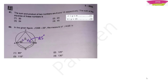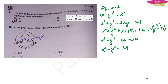The sum and product of two numbers are 8 and 15 respectively. To find the sum of their squares: let x + y = 8 and xy = 15. Square both sides of x + y = 8 to get x² + 2xy + y² = 64. Substitute xy = 15, giving x² + y² = 64 − 30 = 34. Option giving 34 is the right answer.